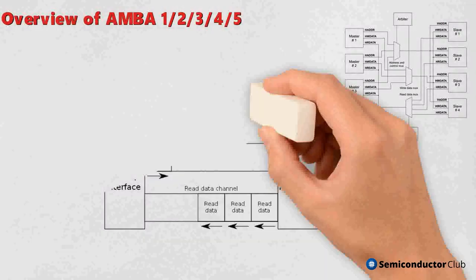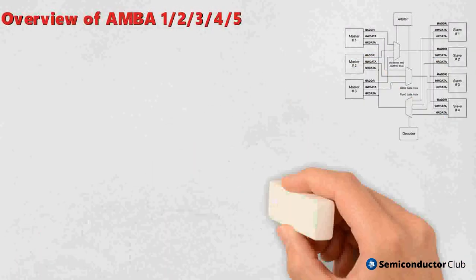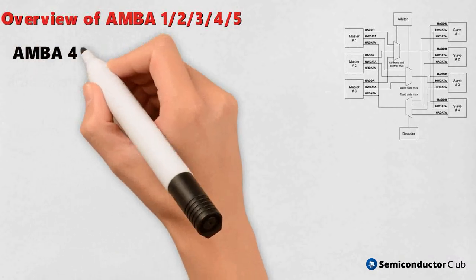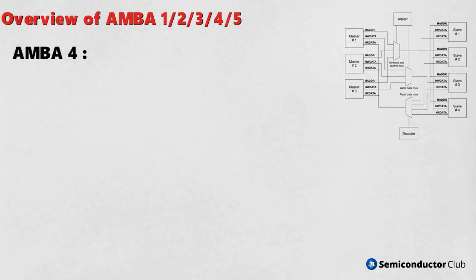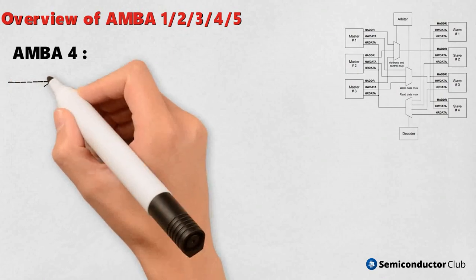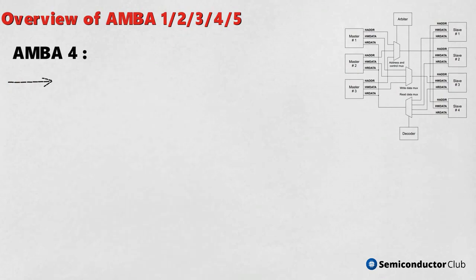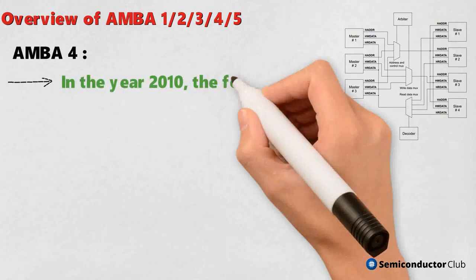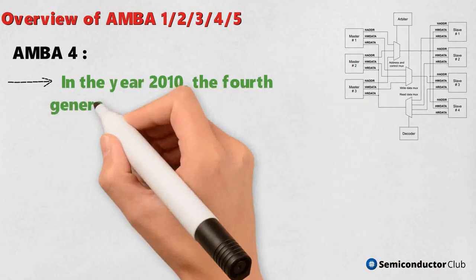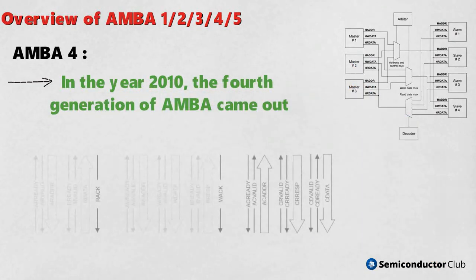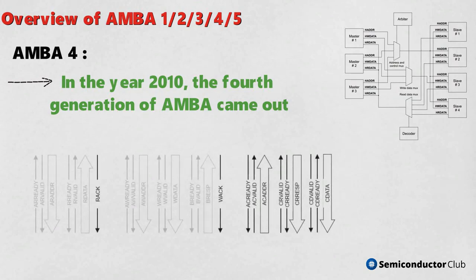AMBA 4: in the year 2010, the fourth generation of AMBA came out with a new bus named AXI Coherency Extensions (ACE), with slight changes. AXI 4, AXI 4-Lite, AXI Stream V1.0, ATB V1.1, APB 4 V2.0, and ACE-Lite were introduced.